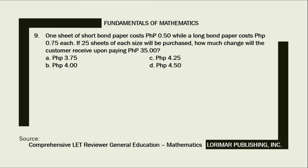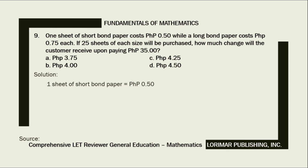One sheet of short bond paper costs 50 cents while a long bond paper costs 75 cents each. If 25 sheets of each size will be purchased, how much change will the customer receive upon paying 35 pesos? A. 3.75 pesos, B. 4 pesos, C. 4.25 pesos, D. 4.50 pesos. Here is our solution.